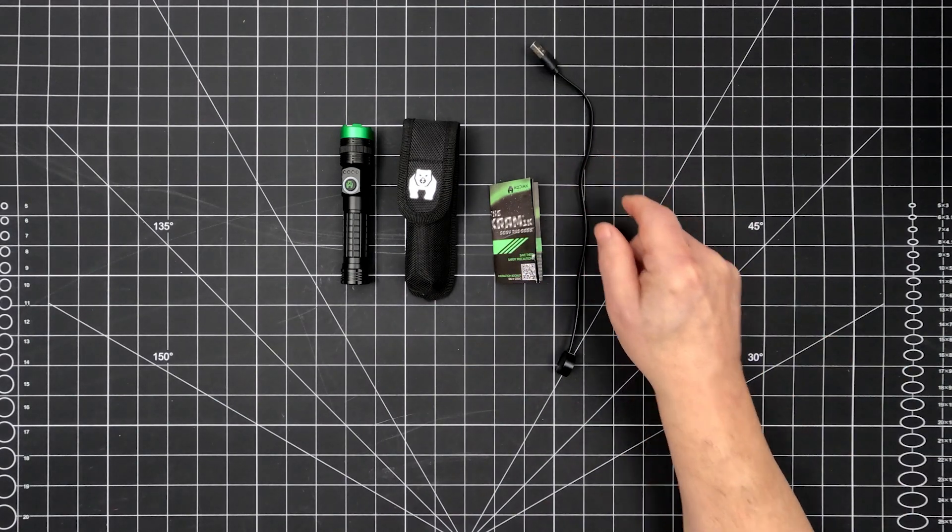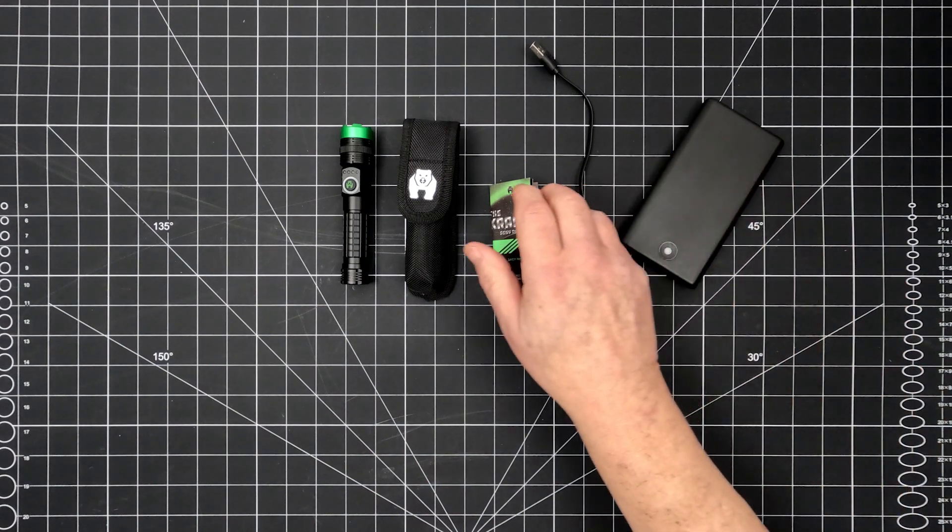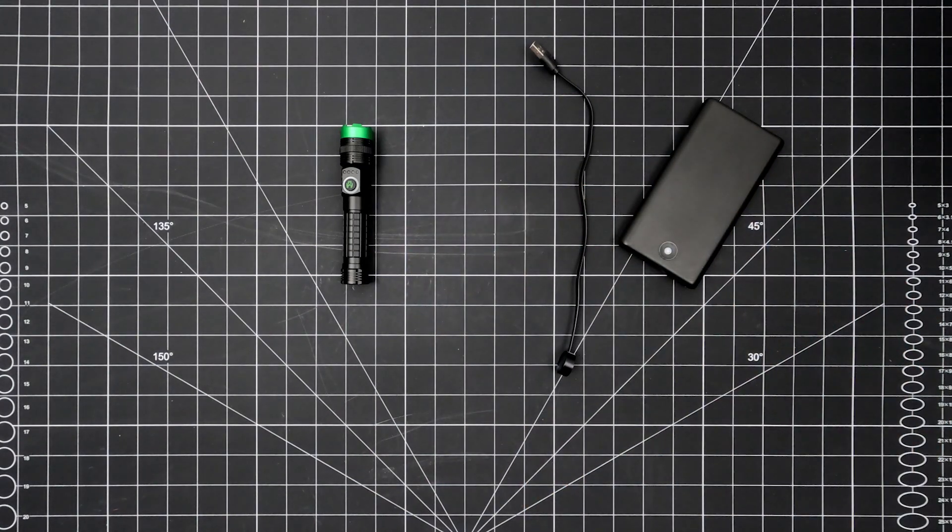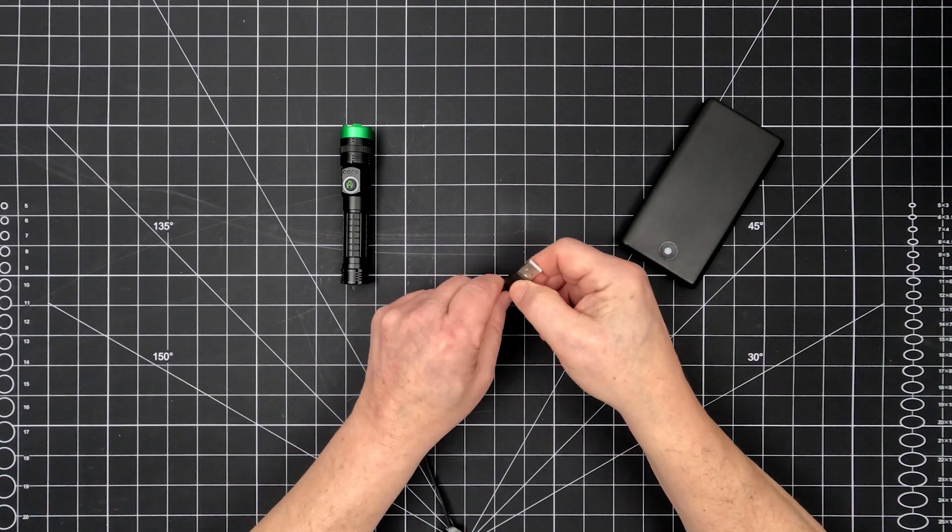The functionality of both flashlights is the same with the only difference being lumens ratings. The CRAM is rechargeable and is partially charged right out of the package, but should be charged fully before first use.